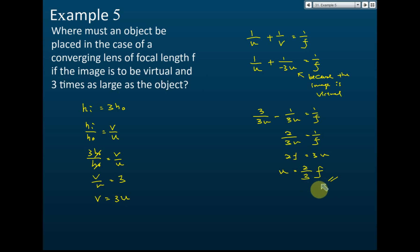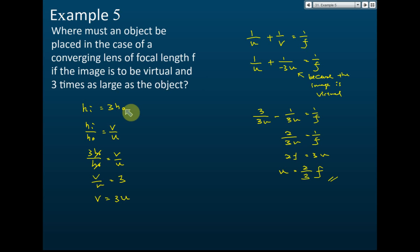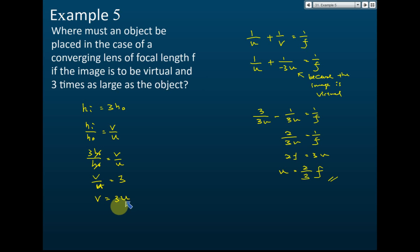The answer is two over three f. No numbers are given — just the symbol f — so the answer is expressed in terms of f. The image is three times larger than the object, so the size of the image is three times the size of the object. Using hi over ho equals v over u, hi equals three ho, so three ho over ho equals v over u. Cancelling ho gives v over u equals three, so v equals three u.